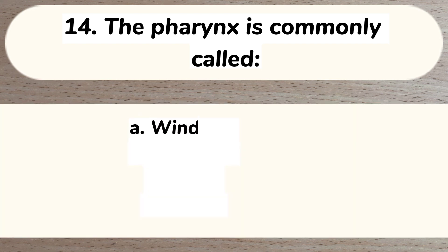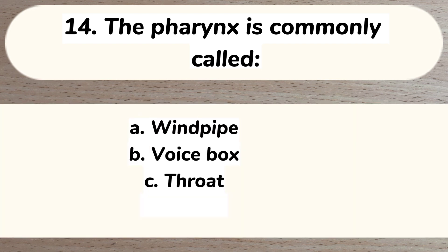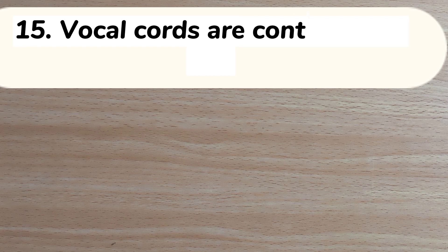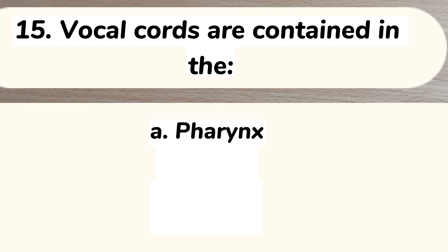Number 14. The pharynx is commonly called: A. Windpipe. B. Voice box. C. Throat. D. Airway. Answer: C. Throat.